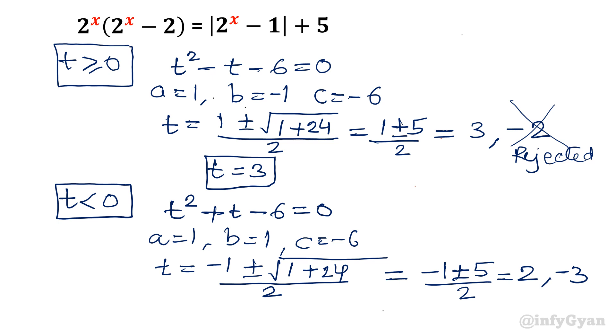Because of t negative, you will reject this time positive value. Because you are solving for t negative only. So negative value will be accepted, positive will be rejected. Earlier case was t positive. So positive is accepted, negative is rejected.